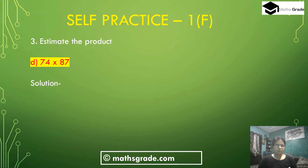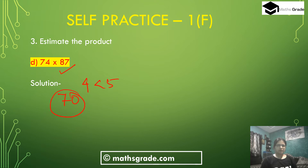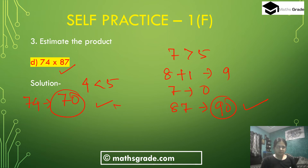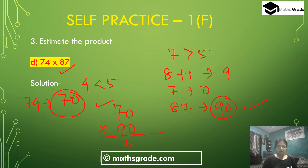Now part D: 74 multiplied by 87. First, round 74 to the nearest 10. The unit place digit is 4, and 4 is less than 5, so don't add 1 to the tens place digit. Just write down 7 as it is and the unit place digit 4 changes to 0. So 74 rounded to the nearest 10 will be 70. Now for 87, the unit place digit 7 is more than 5, so add 1 to the tens place digit: 8 plus 1 is 9. The unit place digit 7 changes to 0. So 87 rounded to the nearest 10 will be 90. Now 70 multiplied by 90 is 6,300.